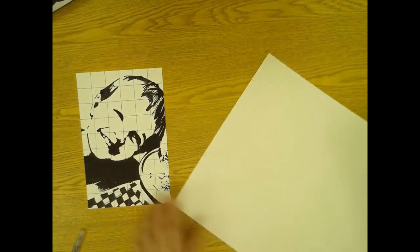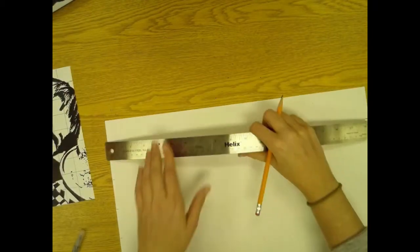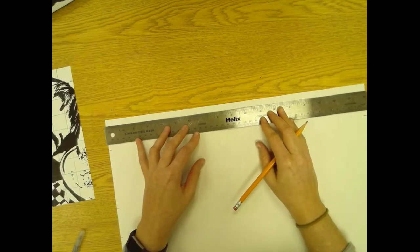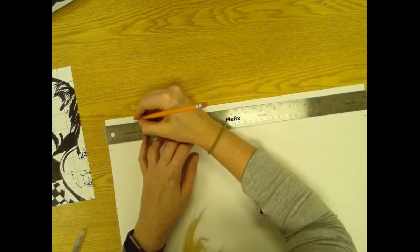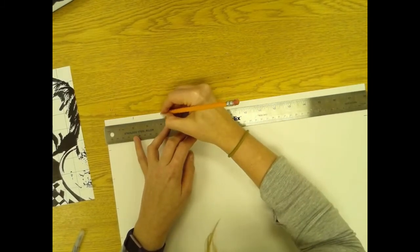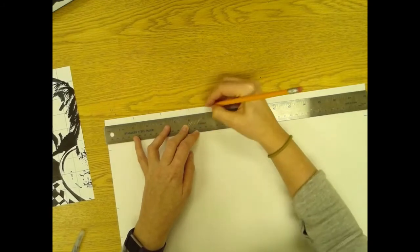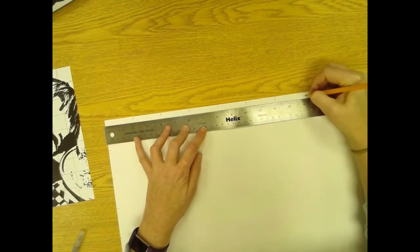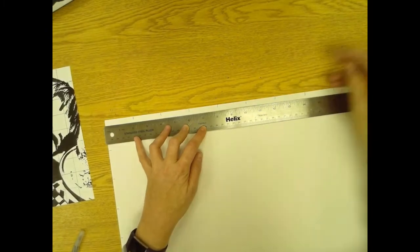And then along the side is 18 inches. We'll still go by twos: 2, 4, 6, 8, 10, 12, 14, and 16, and the same thing on the other side.